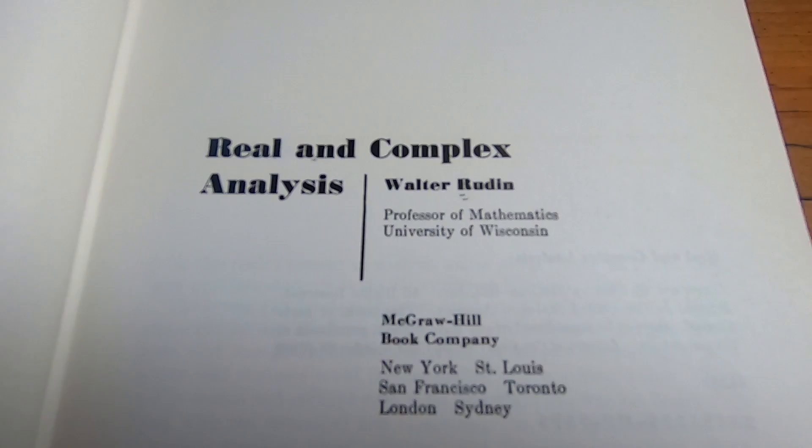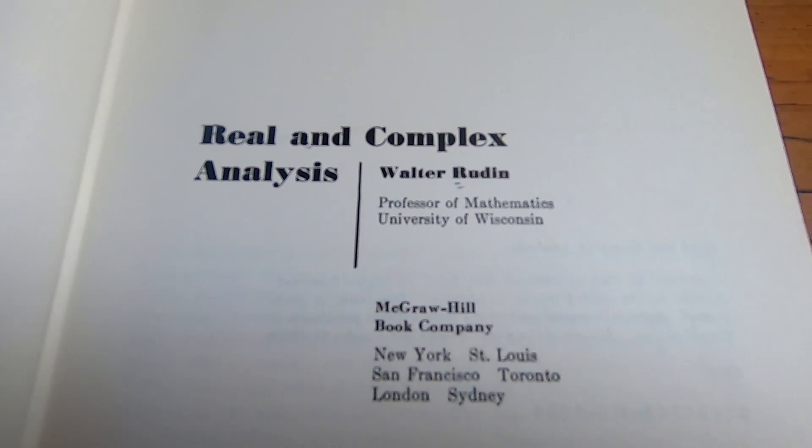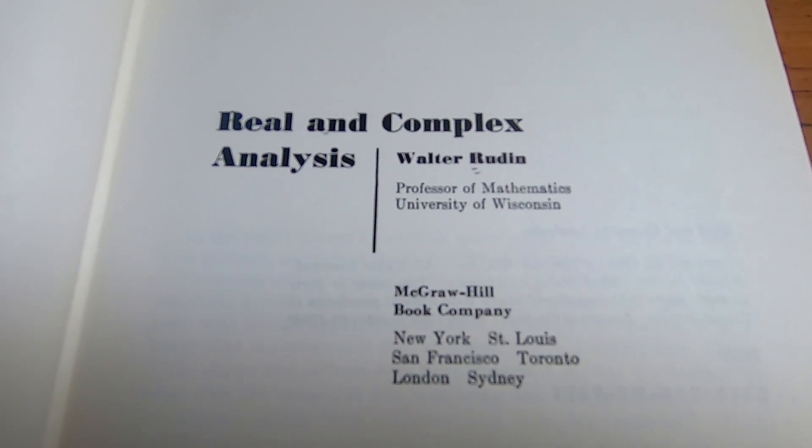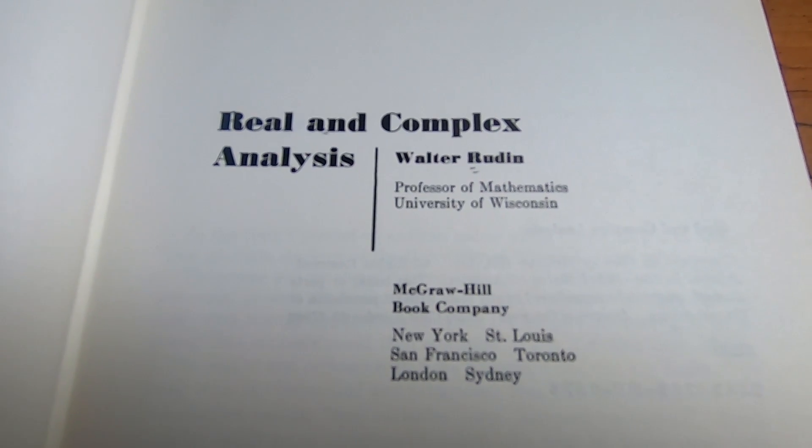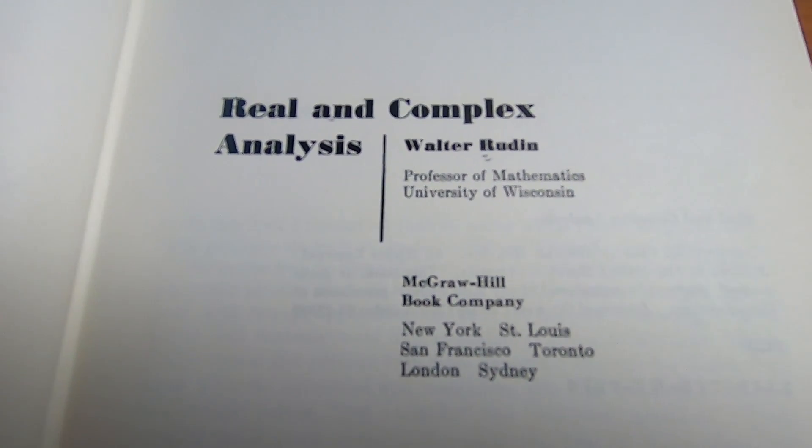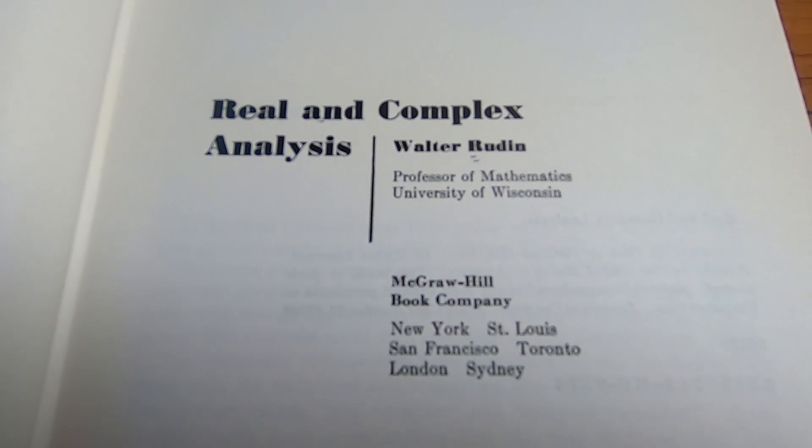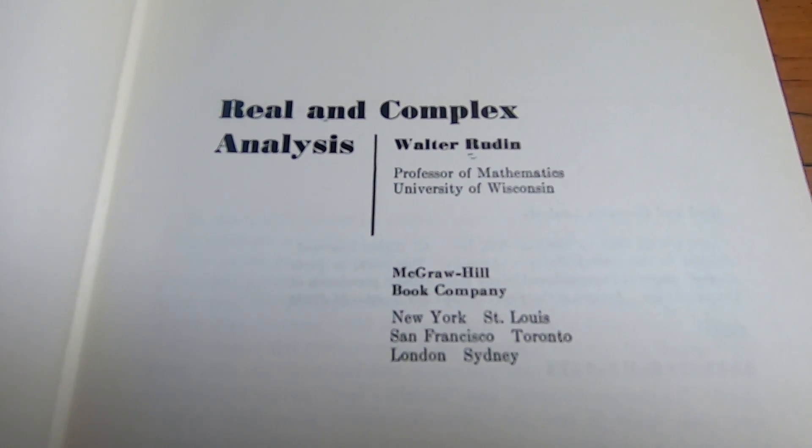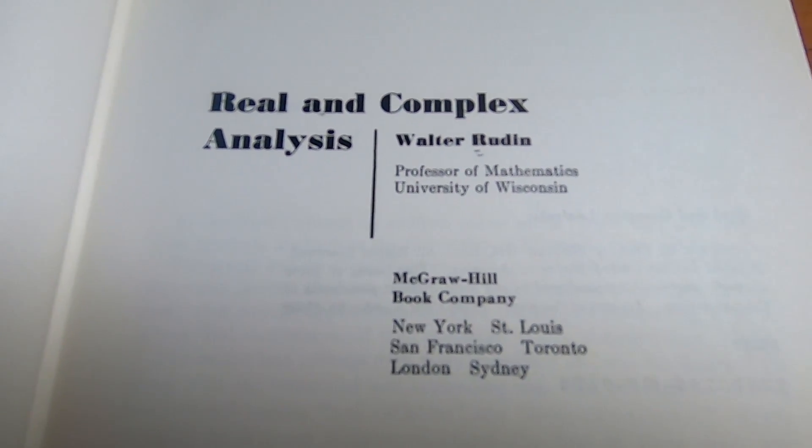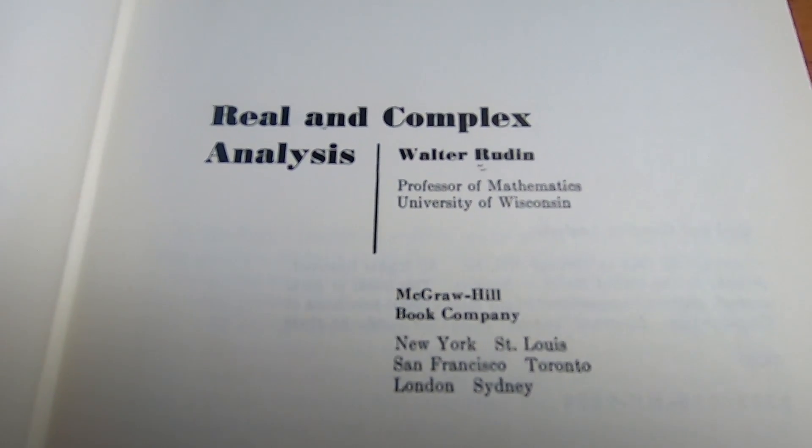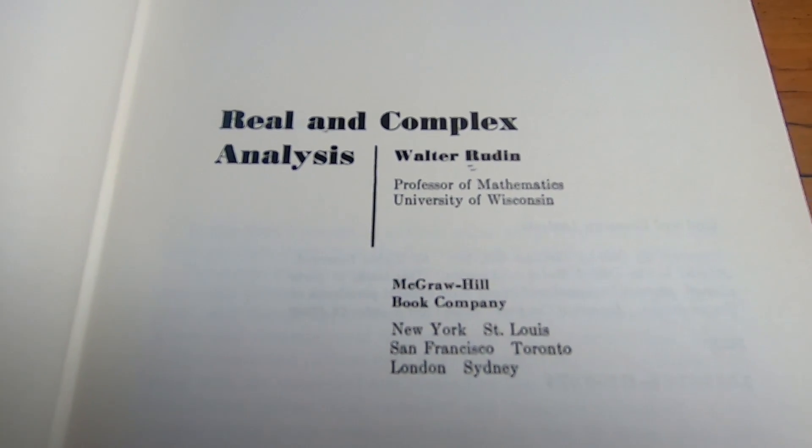This is Papa Rudin. This is the Rudin book. So Baby Rudin is Principles of Mathematical Analysis. That's the one for undergraduates which talks about continuity, uniform convergence, etc. This is his book on measure theory and this is definitely a graduate level book.